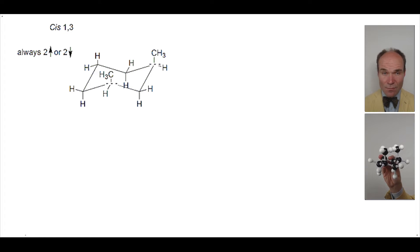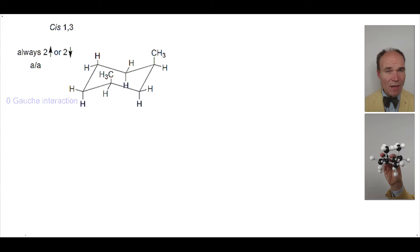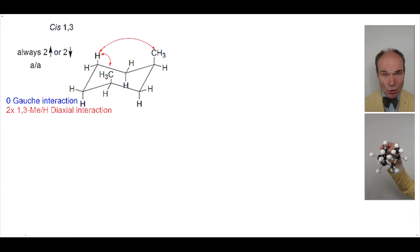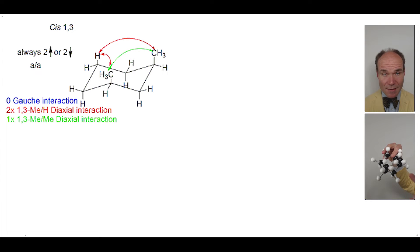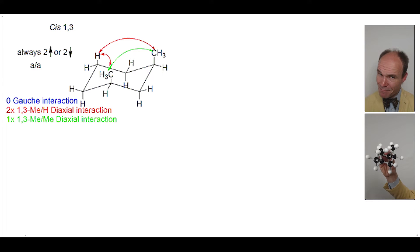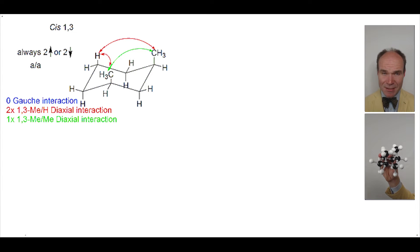This chair conformation has both methyl groups in axial positions. When we look for steric strain, we find no gauche interactions, but there are two 1,3-diaxial interactions between methyl and hydrogen groups, as well as one 1,3-diaxial interaction between a methyl group and a methyl group. This is particularly high in energy.